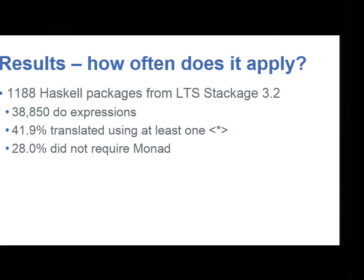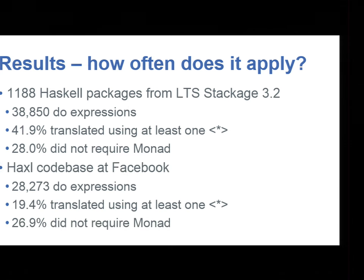Maybe you're wondering how often it applies. We tried it on lots of code. We found 1,000-odd packages in Stackage which had 38,000 do expressions. And 42% of them had some instance of parallelism, somewhere that we could use the applicative operation. And in fact, 28% of them didn't require monad at all. So we could have used a weaker type, an applicative constraint on those. We also looked at the Haxl code base at Facebook which also has a lot of do expressions. Interestingly, we found a similar proportion of those do expressions that didn't require monad at all. But where there was a difference was in the number of do expressions that were translated using at least one applicative star. I think in the Haxl case, what we've got is a lot of smaller do expressions that only require fmap, only require functor. They don't require applicative as well.